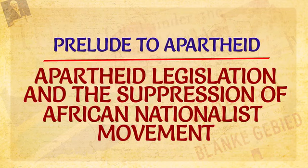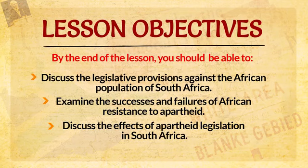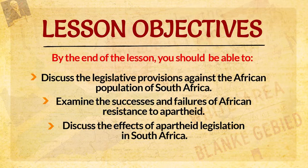Hello and welcome to another interesting class in history with Ado Libatangio. In this class we shall be discussing apartheid legislation and the suppression of African nationalist movement in the theme 'Prelude to Apartheid.' By the end of this lesson you should be able to discuss the legislative provisions against the African population in South Africa, examine the successes and failures of African resistance to apartheid, and discuss the effects of apartheid legislation in South Africa.